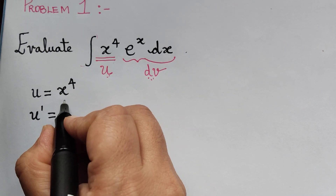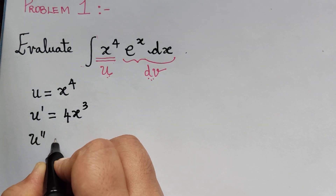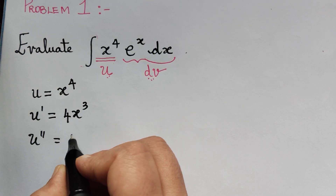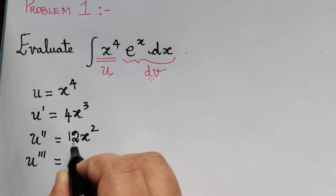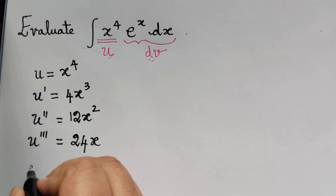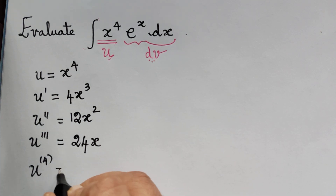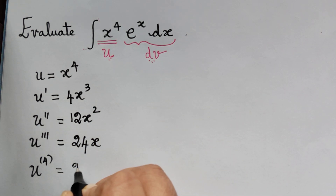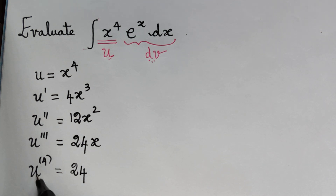Differentiating u = x⁴: u-dash = 4x³, u-double-dash = 12x², u-triple-dash = 24x, and u differentiated four times (u⁽⁴⁾) = 24, which is a constant. Since differentiating a constant gives zero, we stop here — we do not need to differentiate further.